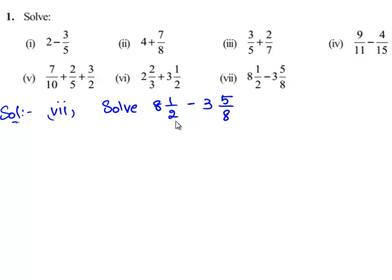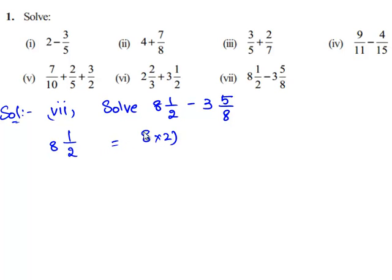In order to subtract 2 mixed fractions, first we need to convert each of the mixed fractions into its improper form. Let us first convert 8 1 by 2 into its improper form. Therefore it is 8 times 2 plus 1 divided by 2, which is equal to 17 by 2.